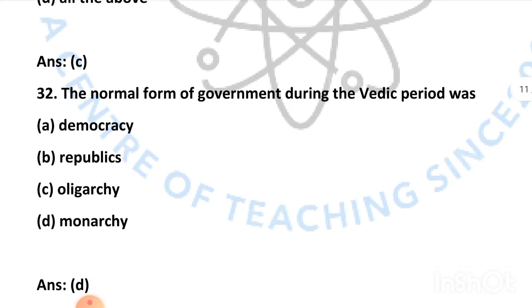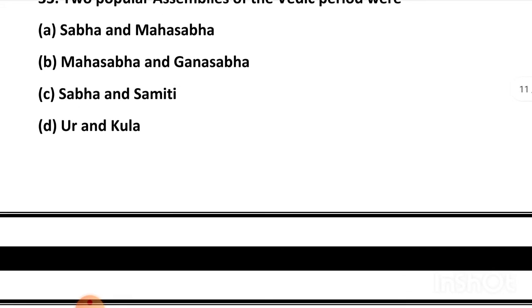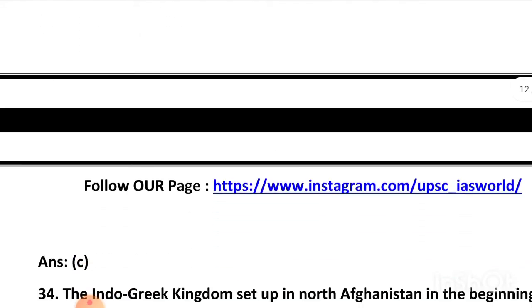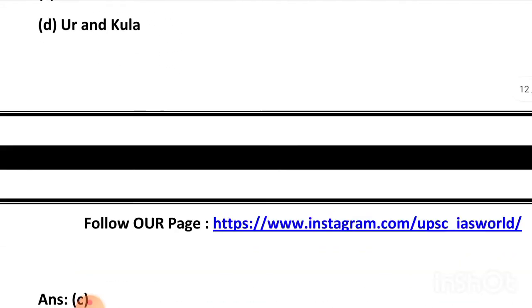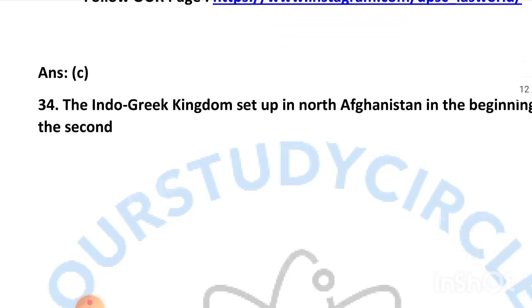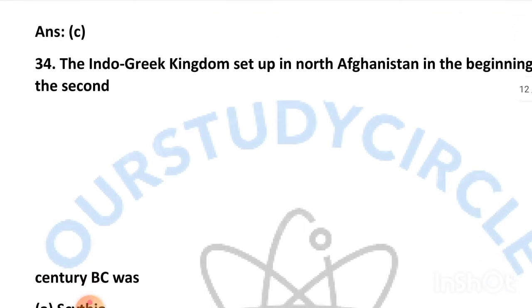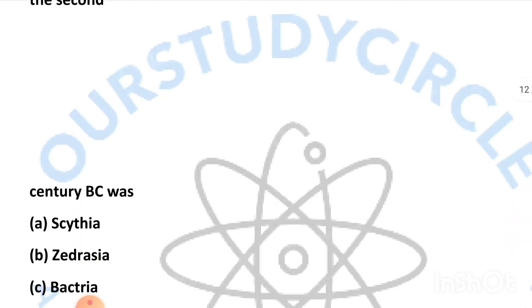Our next question is: the normal form of government during the Vedic period was — and the right answer is monarchy. Our next question is: two popular assemblies of the Vedic period were — and the right answer is Sabha and Samiti.